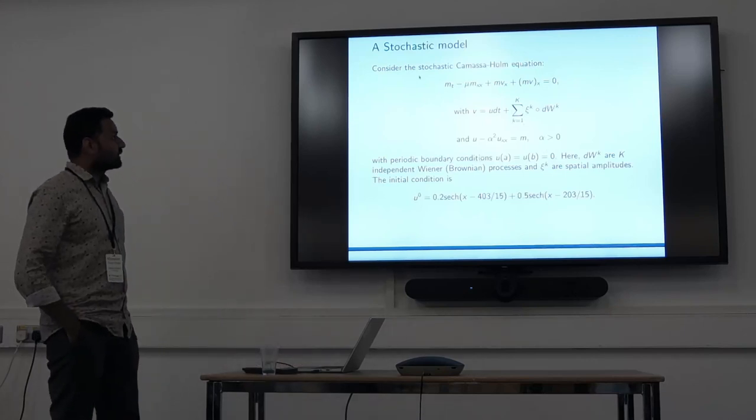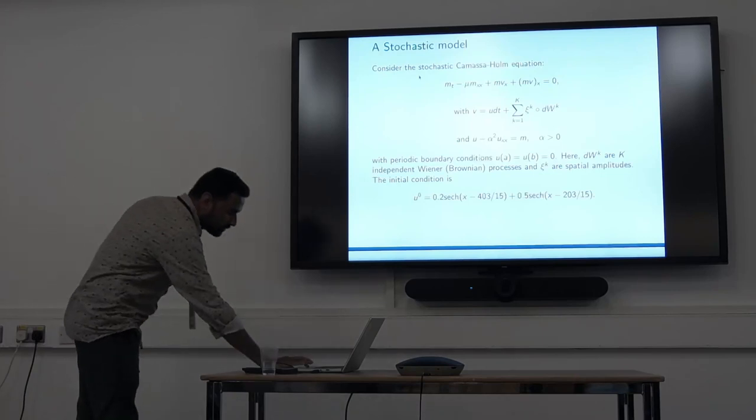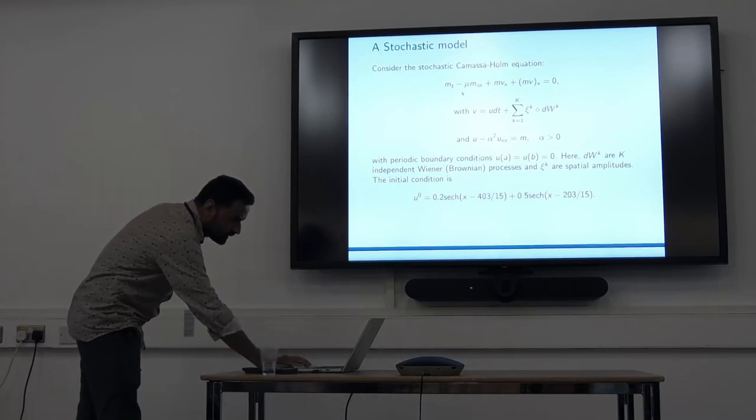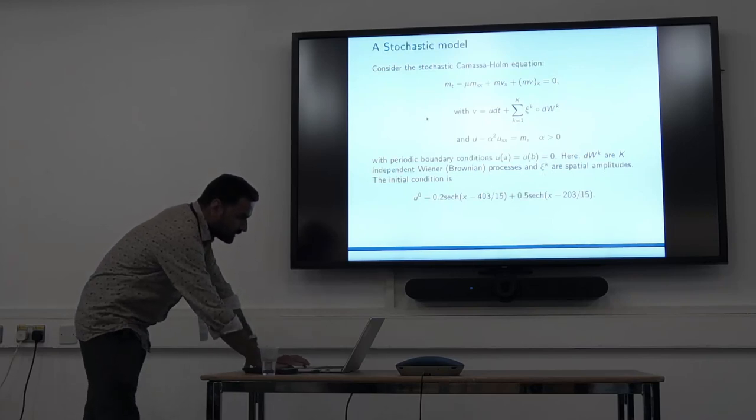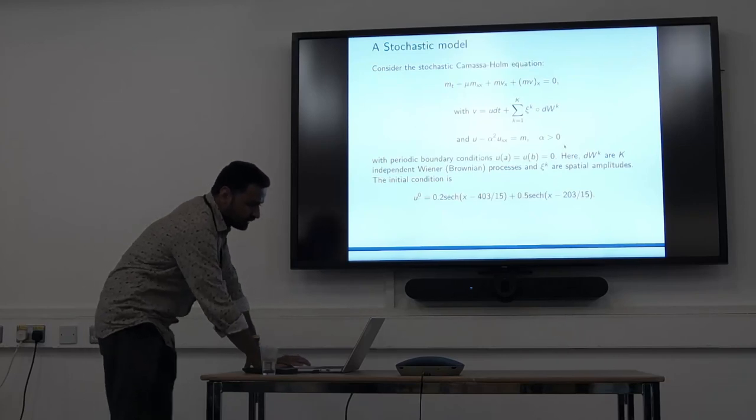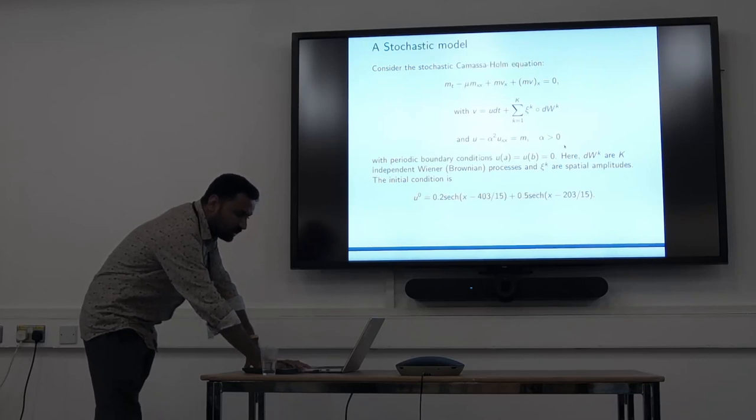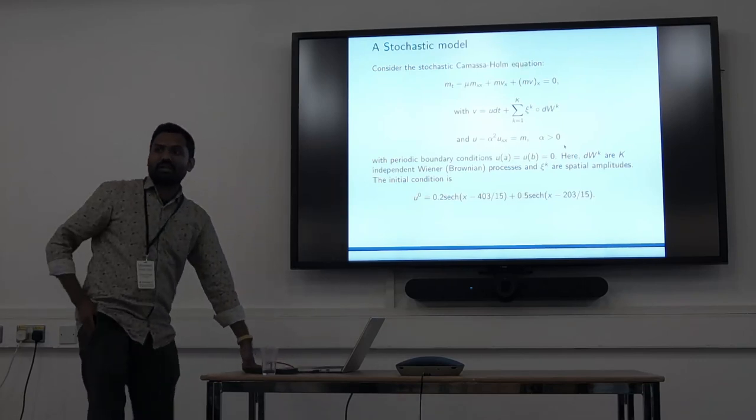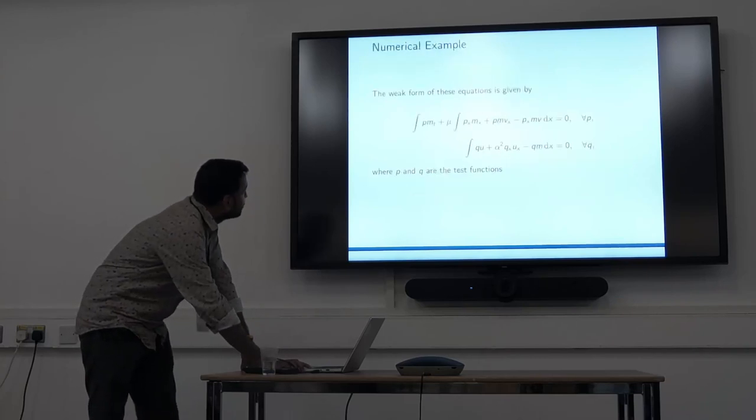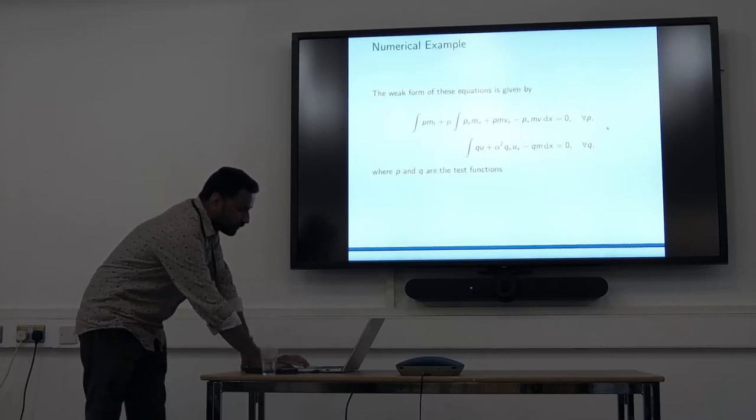This is a variant of the stochastic Camassa-Holm. Here m is momentum density, u is velocity, and we have this noise term. g_w are k independent Wiener processes and xi_k are the spatial amplitudes. For this stochastic model we're taking initial condition u_0. This has already been solved by Colin Cotter and Thomas Bendall before.